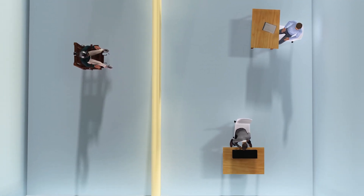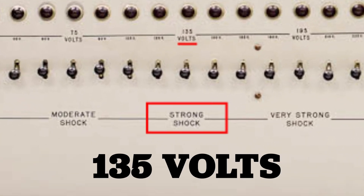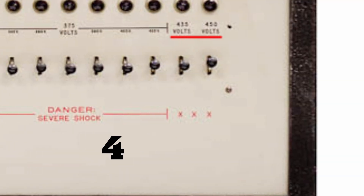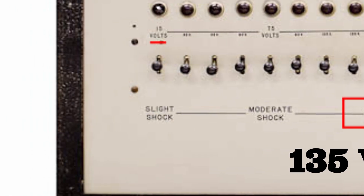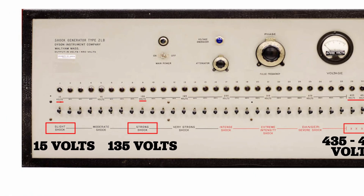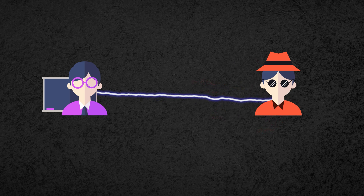The student and teacher were then separated so that they could hear but not see each other. An experimenter supervised and provided the teacher with a shock generator that started at 30 volts and increased in increments all the way up to 450 volts. The generator was clearly marked — 135 volts was labeled a strong shock, while 435 to 450 volts was marked as life-threatening. To emphasize the point, teachers were given a test 15-volt shock. They were then told to teach students word pair combinations, and each time the student made a mistake, the teacher had to administer a progressively higher shock.